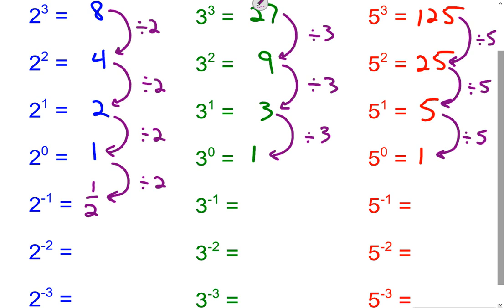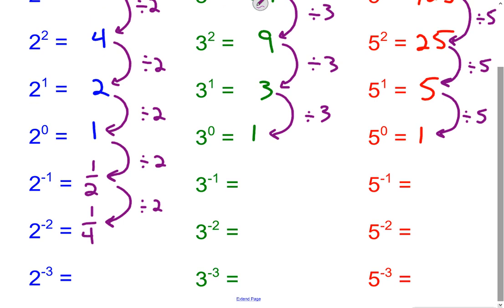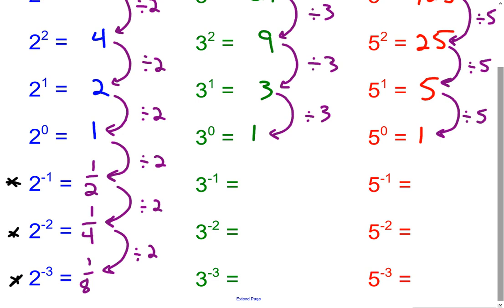Continuing the pattern: 2 to the negative second — divide by 2 again — gives us 1 fourth, because 1 half divided by 2 is 1 fourth. To get to 2 to the negative third, divide by 2 again to get 1 eighth. Now notice: if you ignore the negative sign, 2³ was 8 — that's the denominator of 2⁻³. 2² was 4 — denominator of 2⁻². 2¹ was 2 — denominator of 2⁻¹. There's a clear pattern here.